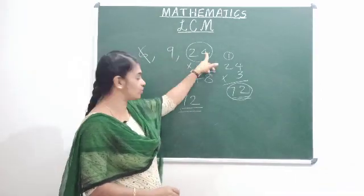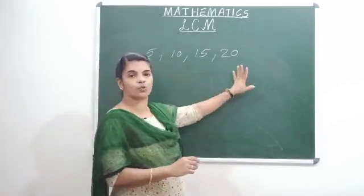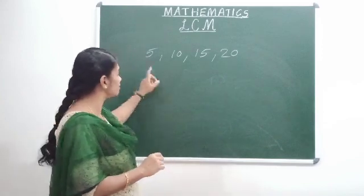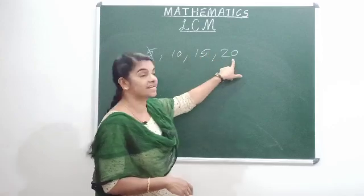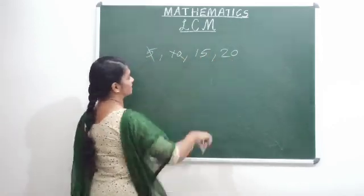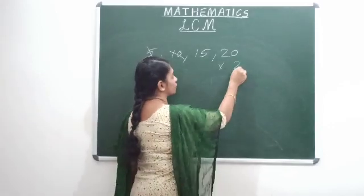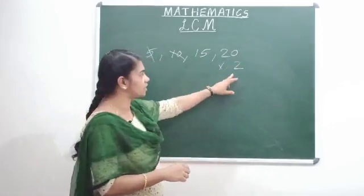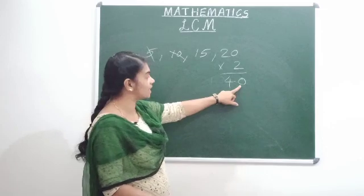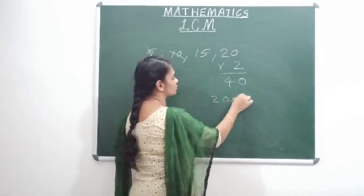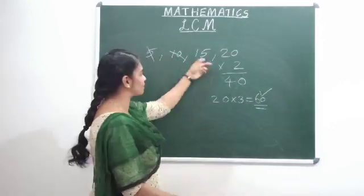We have 4 numbers: 5, 10, 15, 20. Let's find the LCM. We have a typical LCM. In the multiplication table, we have 5 and 10. You can do 20 into 2 to get 40. But 15 is not a factor of 40. You can do 20 into 3 to get 60. You can check 15 into 4 also gives 60. The LCM is 60.